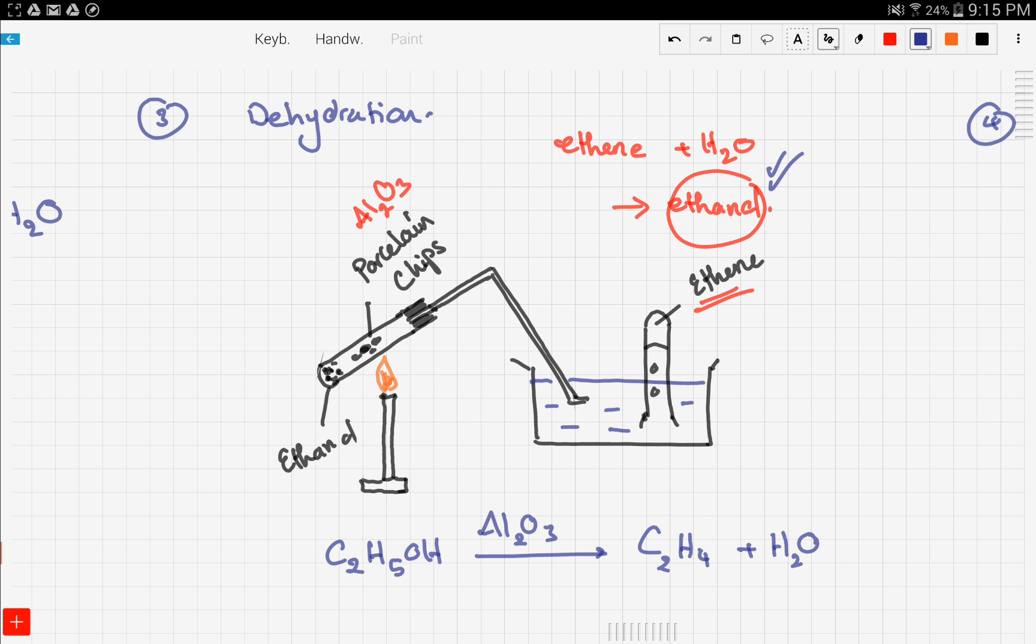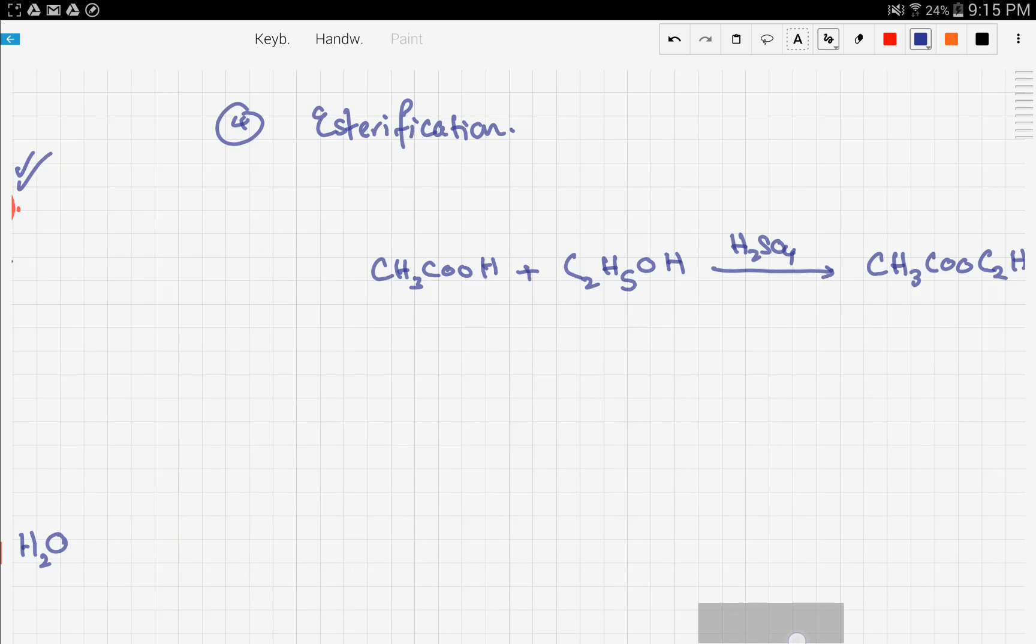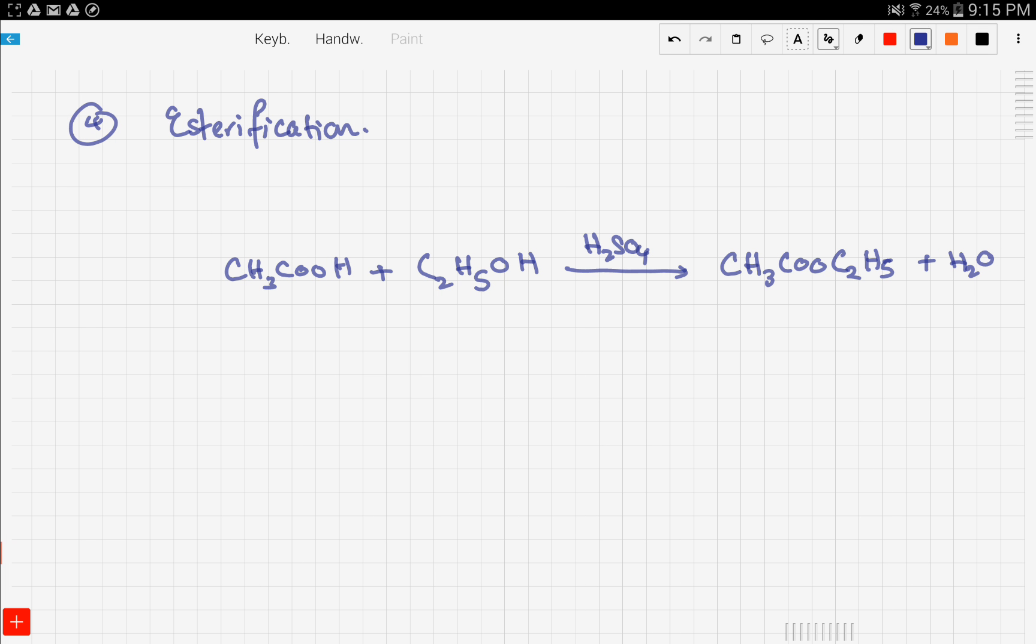Let's move on to the last reaction, which is called esterification. In this reaction, alcohols react with organic acids like ethanoic acid to form esters in the presence of concentrated sulfuric acid. We have ethanoic acid (CH3COOH) and ethanol (C2H5OH) reacting together in the presence of concentrated H2SO4, and that yields an ester which is ethyl ethanoate (CH3COOC2H5) plus water.